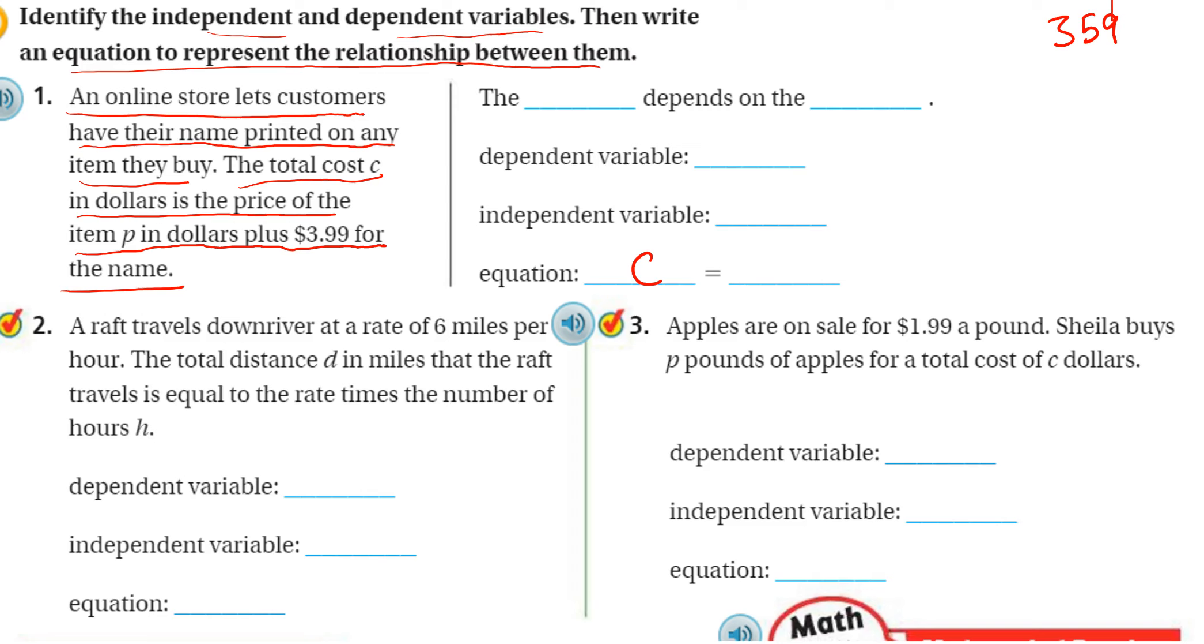If I want to buy something at the store, let's say I buy a trophy, and I want to get somebody's name engraved on it. Well, the total cost is going to be the price of the trophy, plus they charge me $3.99 to put the name on it.